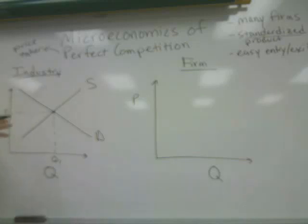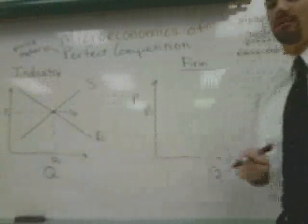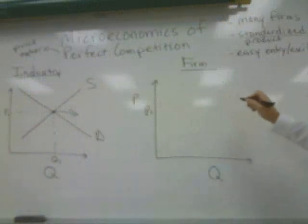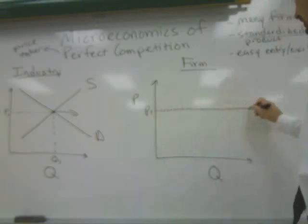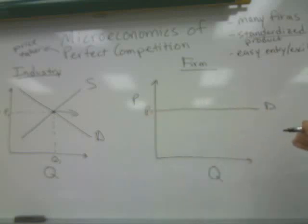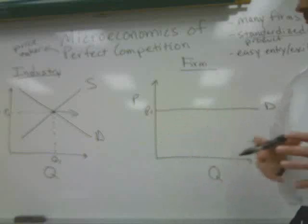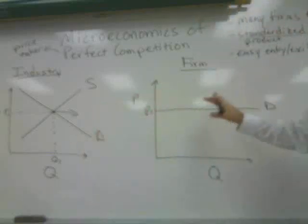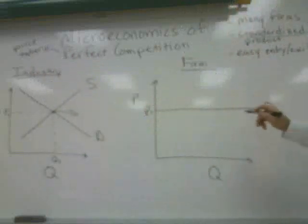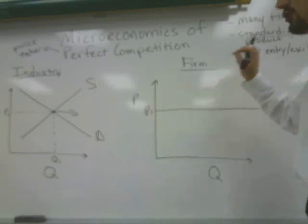Moving from our industry curves to our firm curves, we take this equilibrium price and place it over here for the firm. Interestingly, in the perfectly competitive market, the individual firms face what's known as a perfectly elastic demand curve at the equilibrium price. The industry demand curve has a negative slope due to the income effect, the substitution effect, and diminishing marginal utility, but that doesn't carry over to the firm because the firm is a price taker — it must charge this price across all quantities demanded, which is why the demand curve the individual firm faces is horizontal.